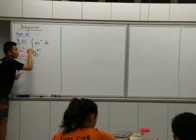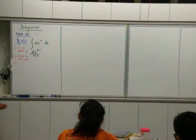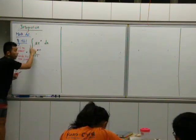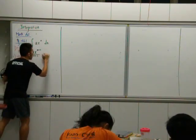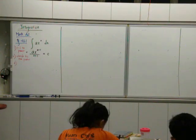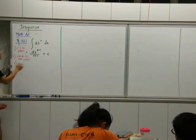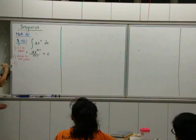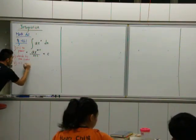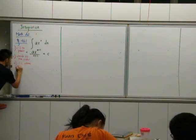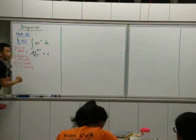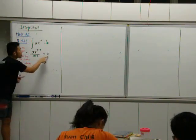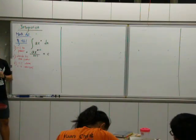Divide by the new power. But there is a very important step. Yes, this is the correct integrated term, but very importantly, you must put a plus C. Why do I say that? When you differentiate C, what do you get? Zero.